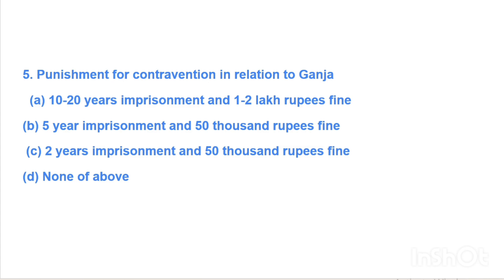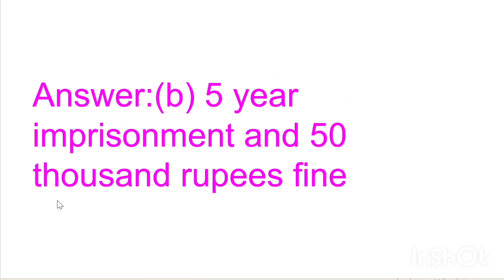Fifth question: Punishment for contravention in relation to ganja — Option A: 10 to 20 years imprisonment and 1 to 2 lakhs rupees fine, Option B: 5 years imprisonment and Rs. 50,000 fine, Option C: 2 years imprisonment and Rs. 50,000 fine, Option D: none of the above. Answer is Option B, 5 years imprisonment and Rs. 50,000 fine.